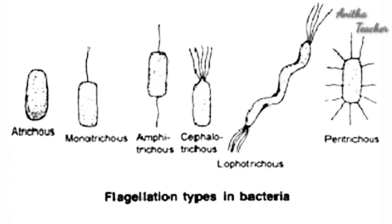Based on the presence of flagella, there are types of bacteria. Atrichous bacteria have no flagella. Monotrichous bacteria have a single flagellum. Amphitrichous bacteria have flagella at both poles. Lophotrichous bacteria have a cluster of flagella at one pole. So we have four or five types of bacteria based on the presence of flagella: Monotrichous (one single flagellum), Amphitrichous (two flagella at opposite ends), and Lophotrichous (a cluster at one pole).